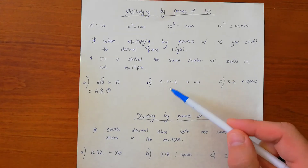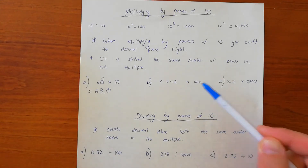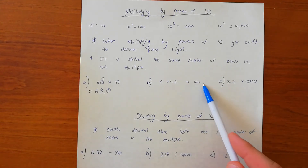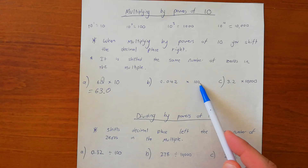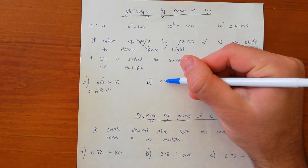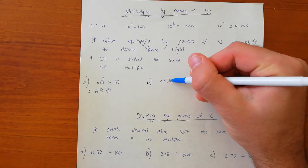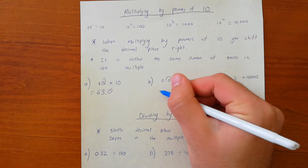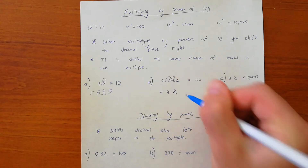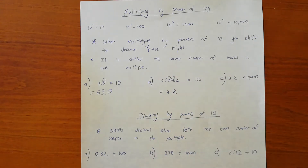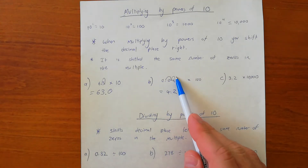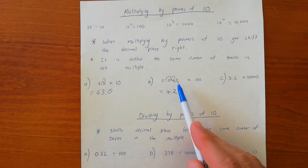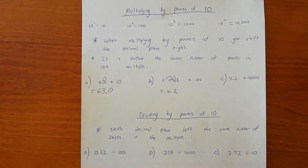If we have 0.042 times 100, we're looking at the multiple — there are two zeros, which means we're going to shift the decimal place two places to the right. So we do one bunny hop, two bunny hops. The decimal place is here, so the answer is 4.2. We shifted it two spots — we didn't need to insert any zeros there.